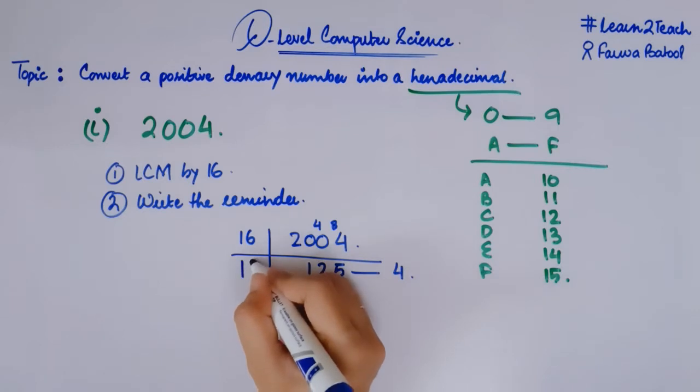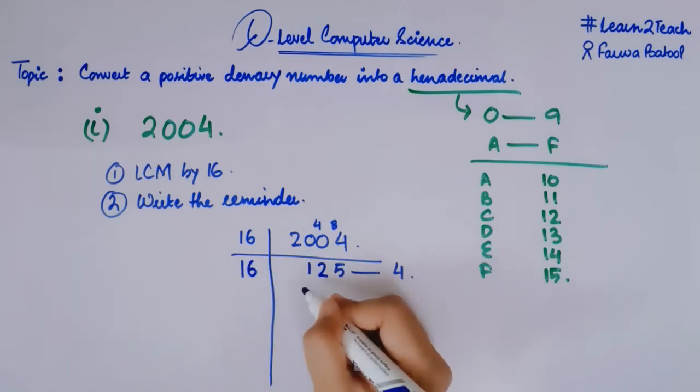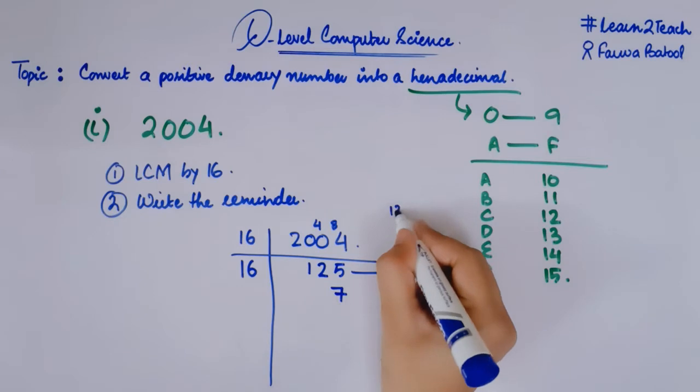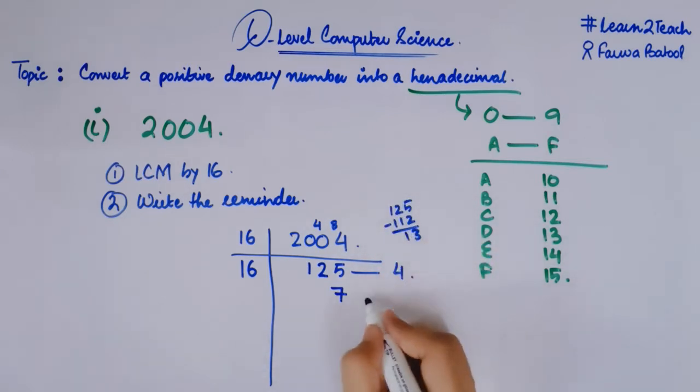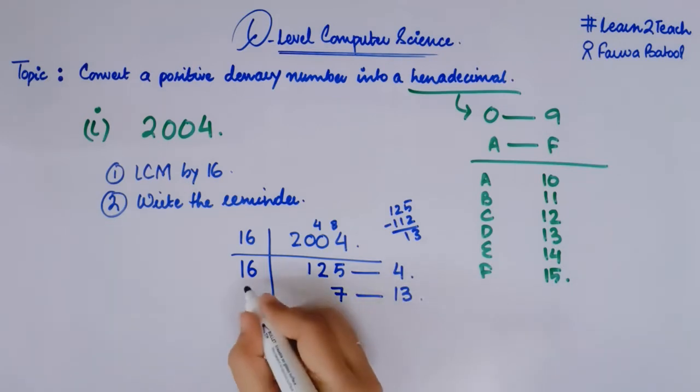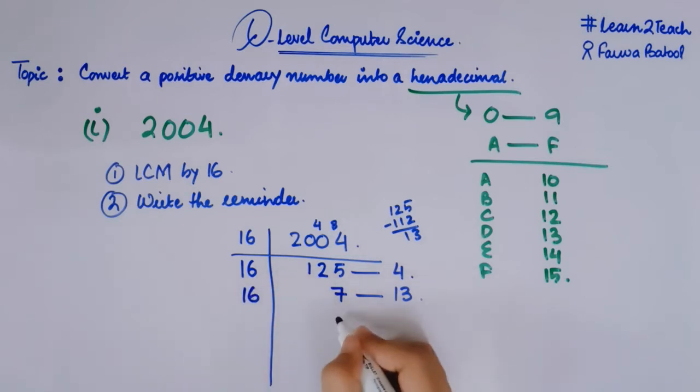Now taking again dividing it by 16 until I get a 0. So 16, 125. 16, 7 is a 112. So 125 minus 112, it would be 13. So what is the remainder? 13. Now what is next? 16, 0 is a 0. What would be remainder? Remainder is 7. So what I have done, I have taken LCM by 16 and I have written remainder in each of this step.